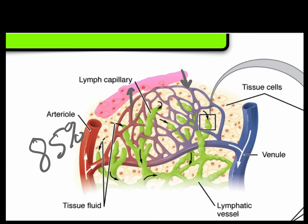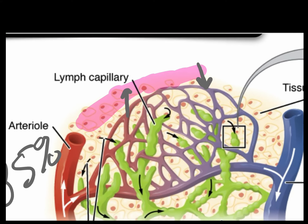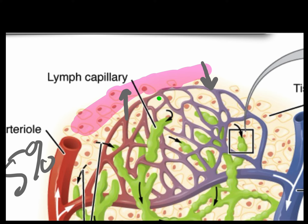If we did not recover that 15% of fluid, it would accumulate within the tissues and result in edema. It would also start to decrease blood volume. So we need a way to take up that extra fluid not reabsorbed by the venous end of the capillaries — and that's where the lymphatic system comes in. The extra fluid moves into the lymphatics, which then return it to the blood.